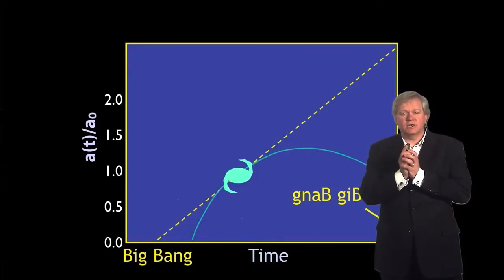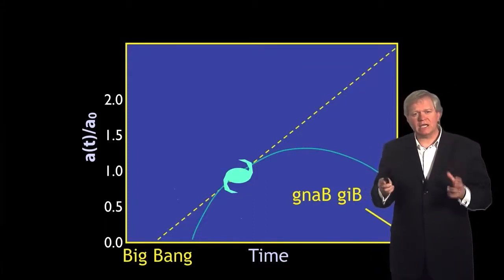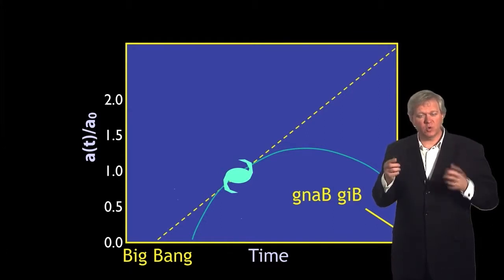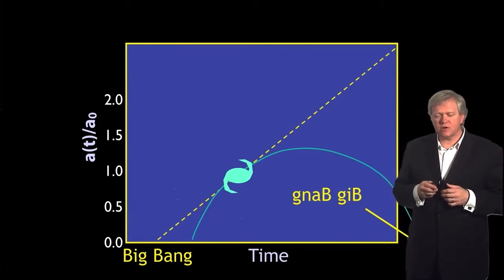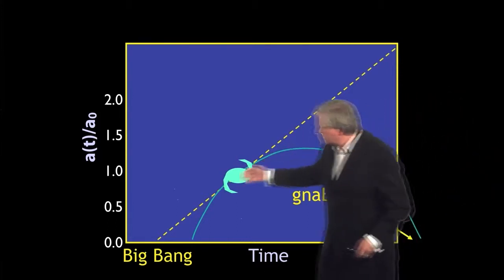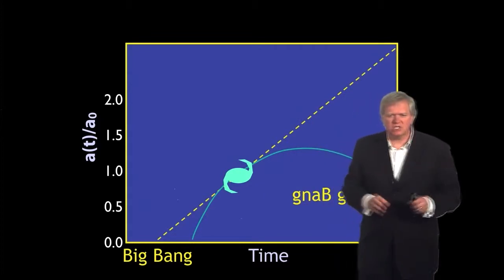So when I came to Australia in 1995, we could look back in time because we had the new equipment, and I'll talk about that in a second. The idea was to figure out if the universe was following the trajectory of the dotted line where there's not much stuff in it.